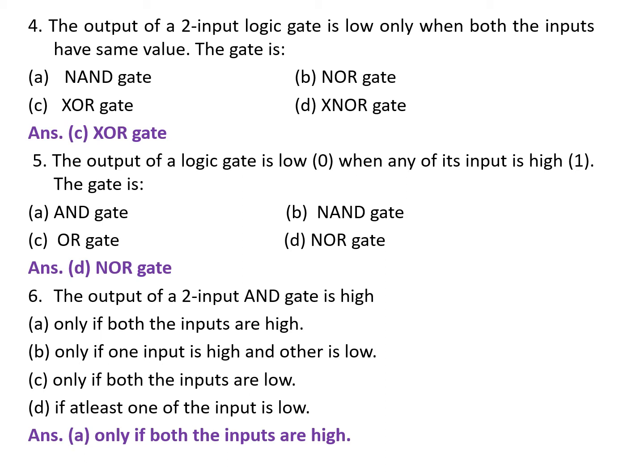Next question: the output of a logic gate is low (0) when any of its inputs is high (1). The gate is — A. AND gate. B. NAND gate. C. OR gate. D. NOR gate. The correct answer is D — NOR gate.